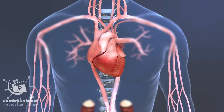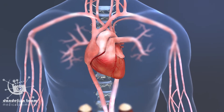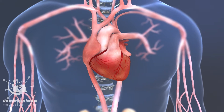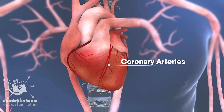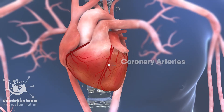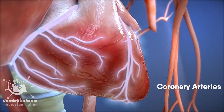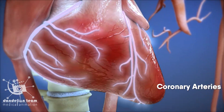Like all organs in the body, the heart needs a constant supply of blood. This is supplied by the coronary arteries, which wrap around the outside of the heart.